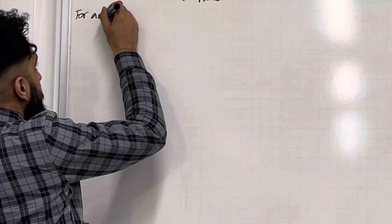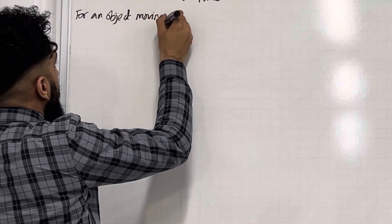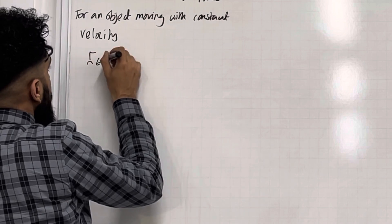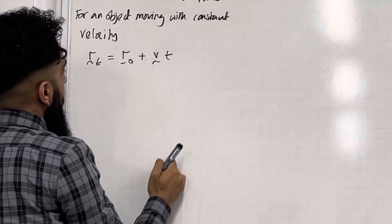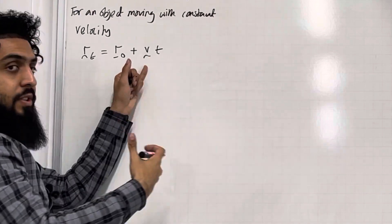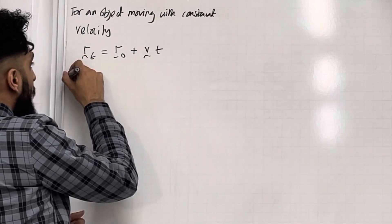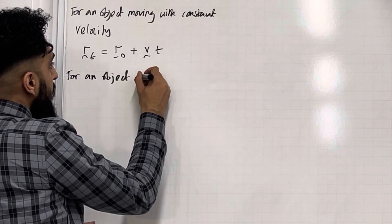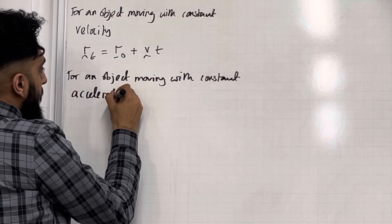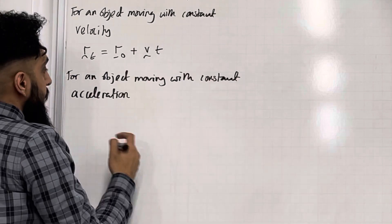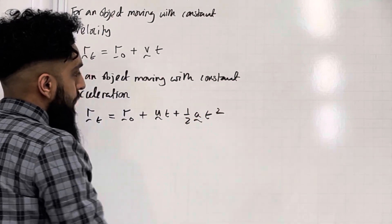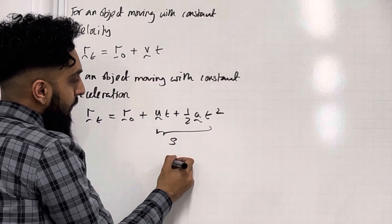Now for an object moving with constant velocity, R(T) is given by R₀ + VT. R(T) is the position of the object at time T. R₀ is the initial position of the object. V is the constant velocity of the object, and T is the time. For an object moving with constant acceleration, R(T) is given by R₀ + UT + ½AT², where this is the displacement vector of the object at time T.